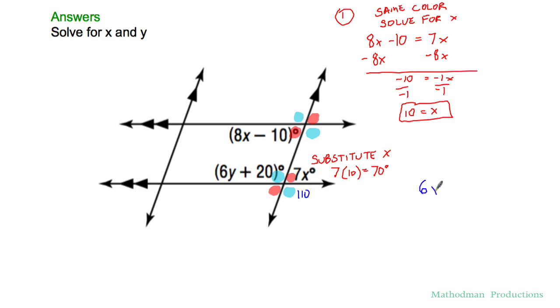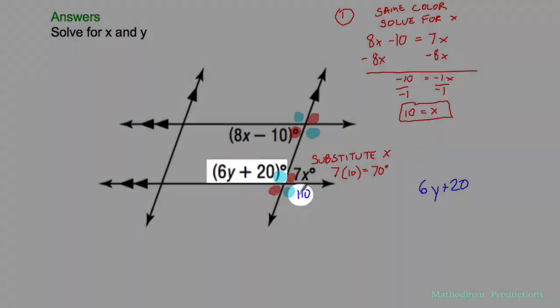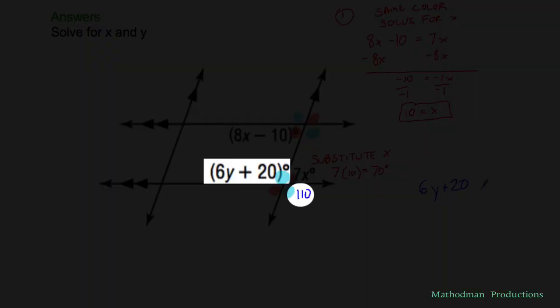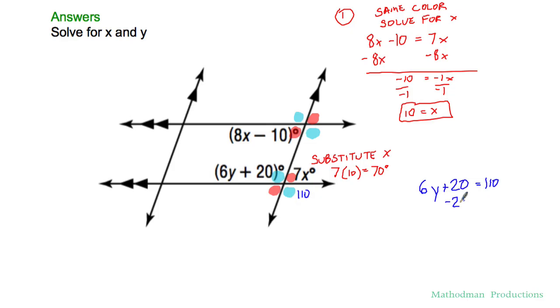Now I can set up an equation to solve for y. I'm solving for y. I got 6y plus 20 and now I have something to compare it to. That's equal to 110. Track 20 on both sides. 110 minus 20 is 90 equals 6y. And you get your answer for y to be 15.